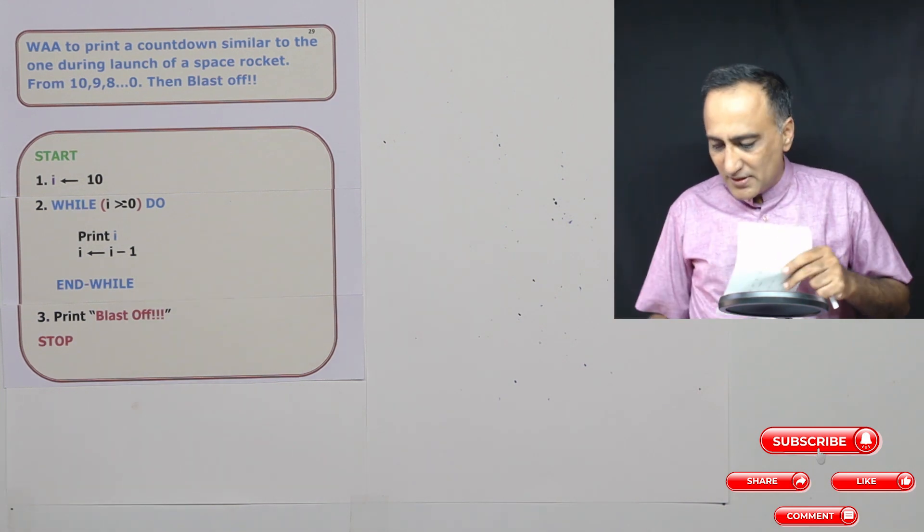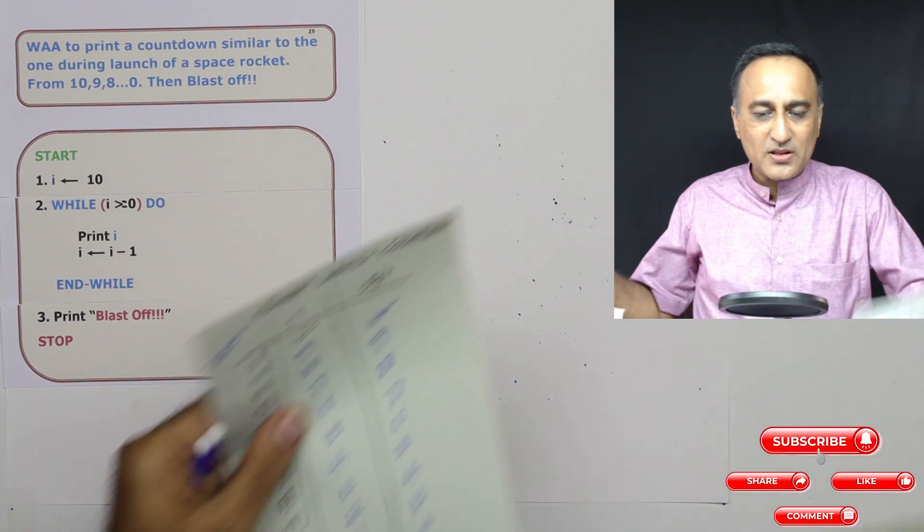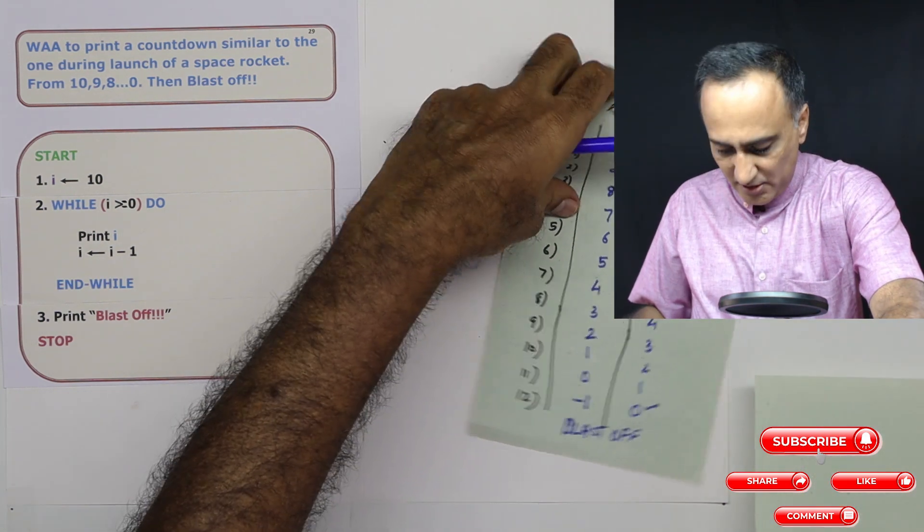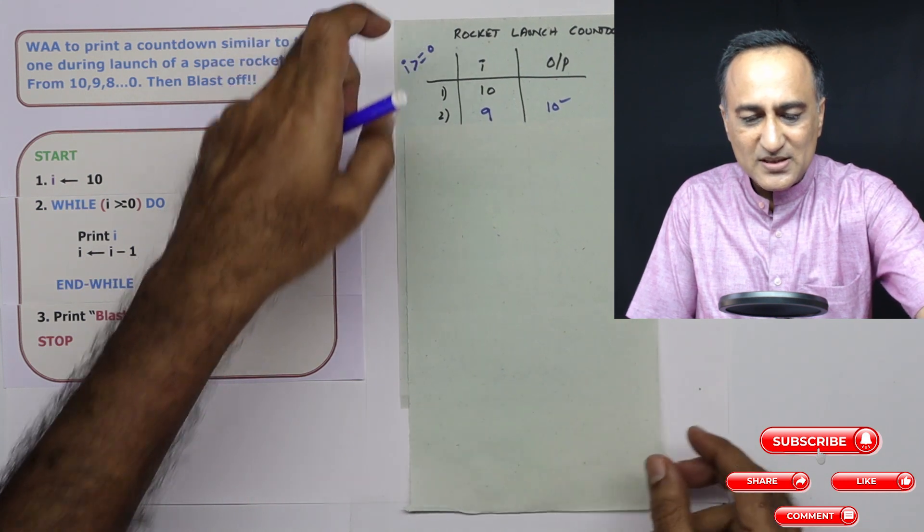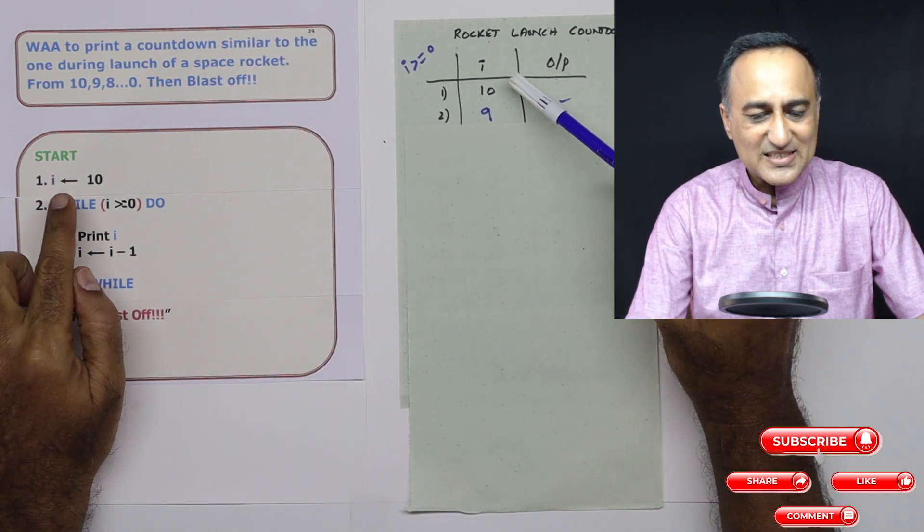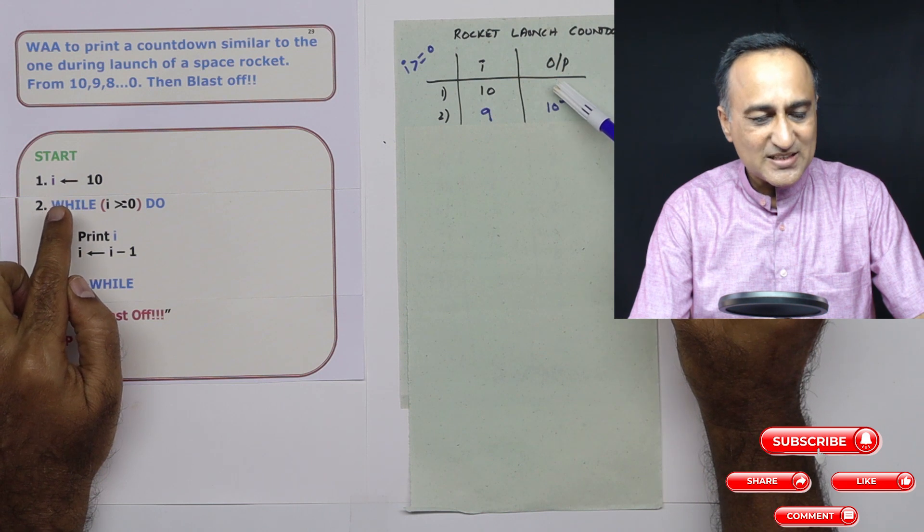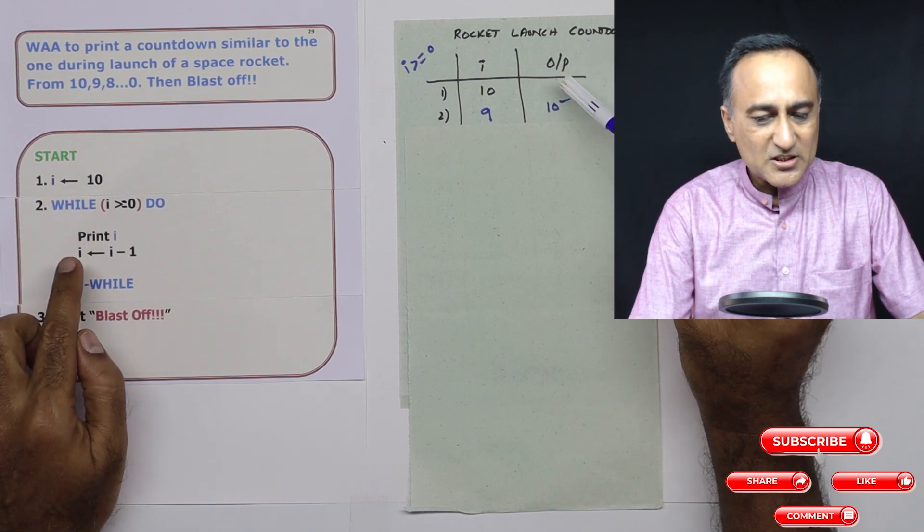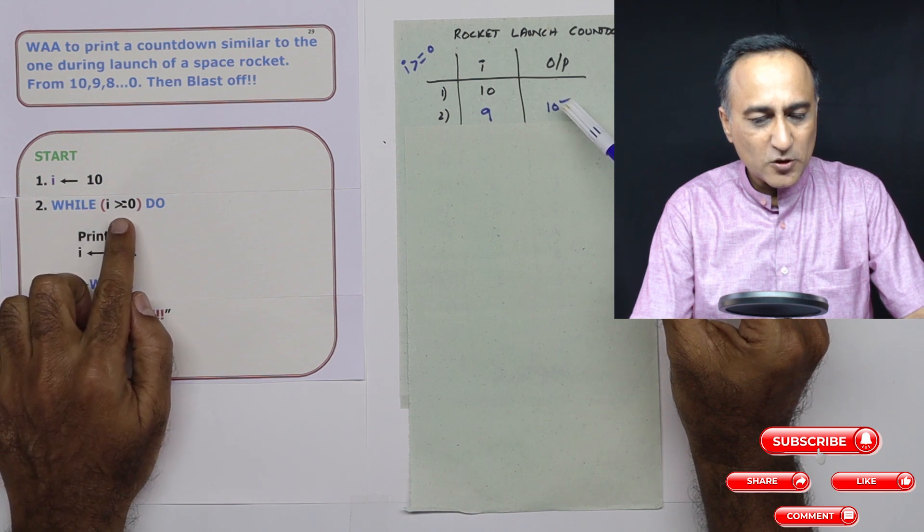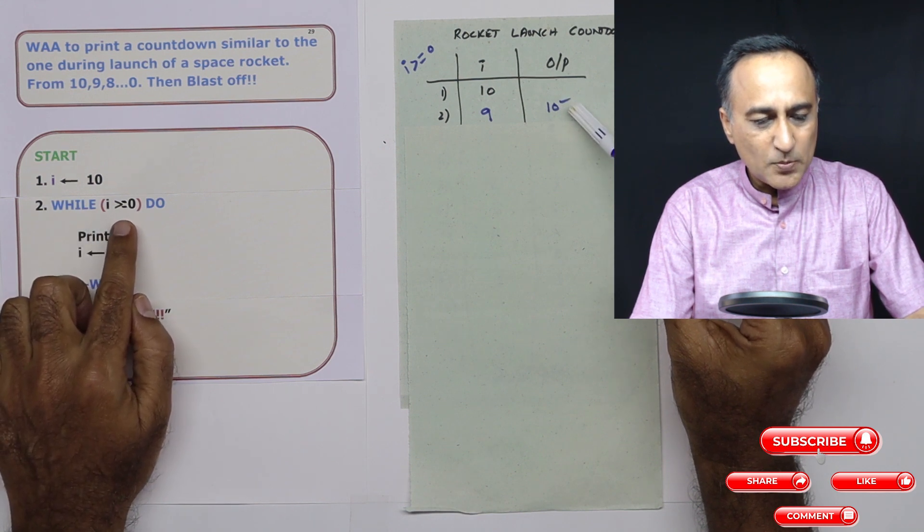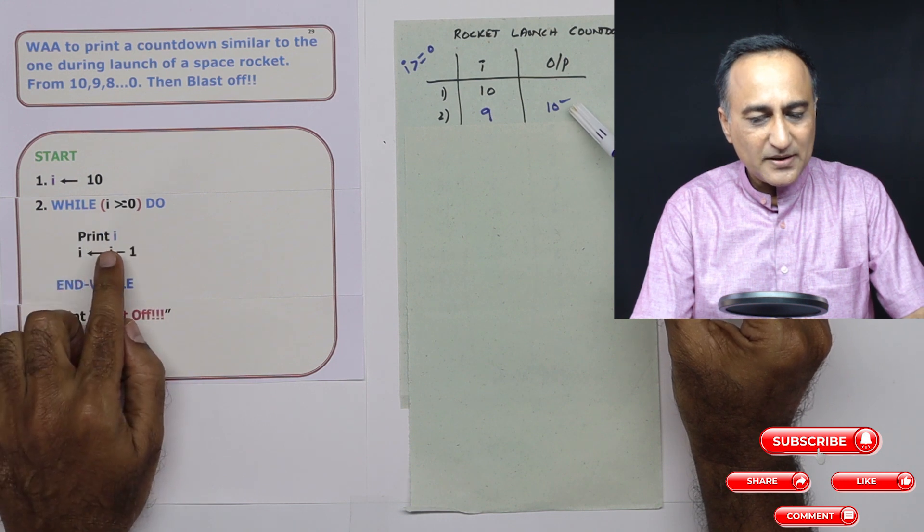As usual, we are not going to trust our logic, we are going to verify whether our logic is correct by running through the code. So first thing what I am doing here is in this step, I is 10, output there is nothing on the screen. So I come here, I which is 10 is greater than or equal to zero is true. So on the output screen, I'm going to come here and print 10.